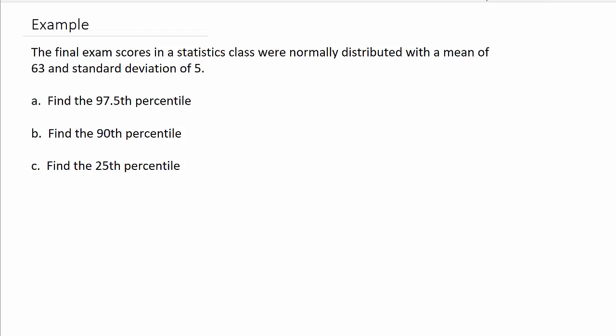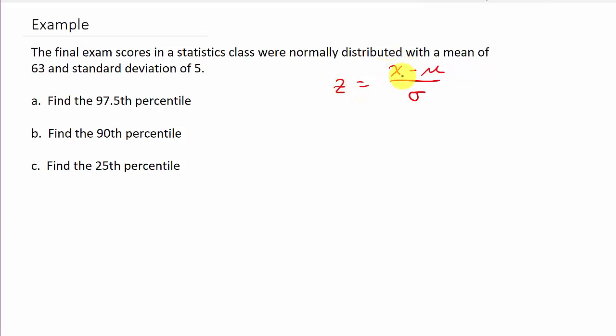In this video we're going to look at finding the percentile for a normal distribution. I've got three different examples, each a little bit different. One we'll be able to find the exact number in the chart, one we won't and it'll be a positive z value, and one we won't and it'll be a negative z value. The key formula to remember is z equals x minus mu over sigma — we're solving for this x value.